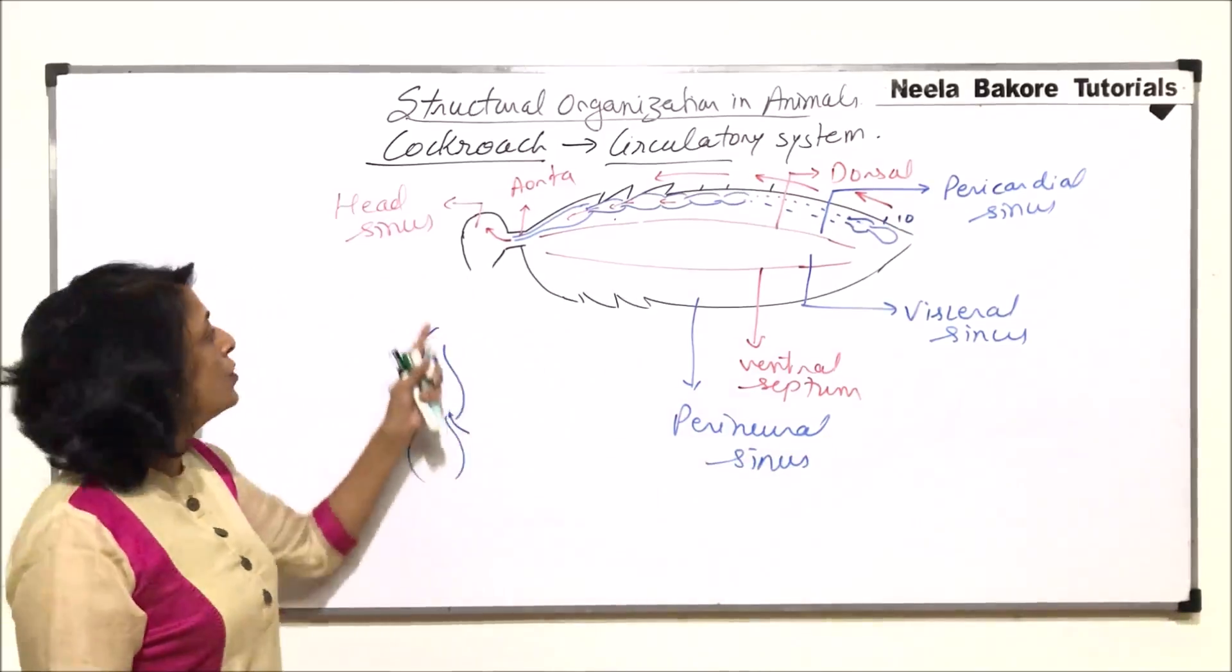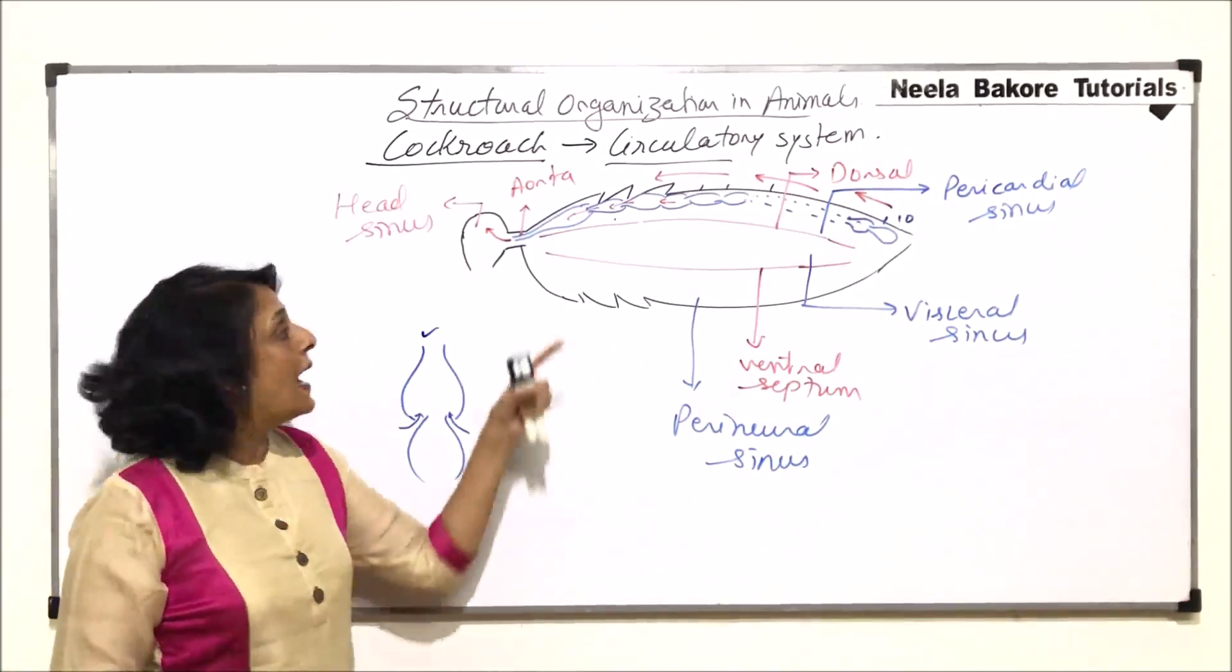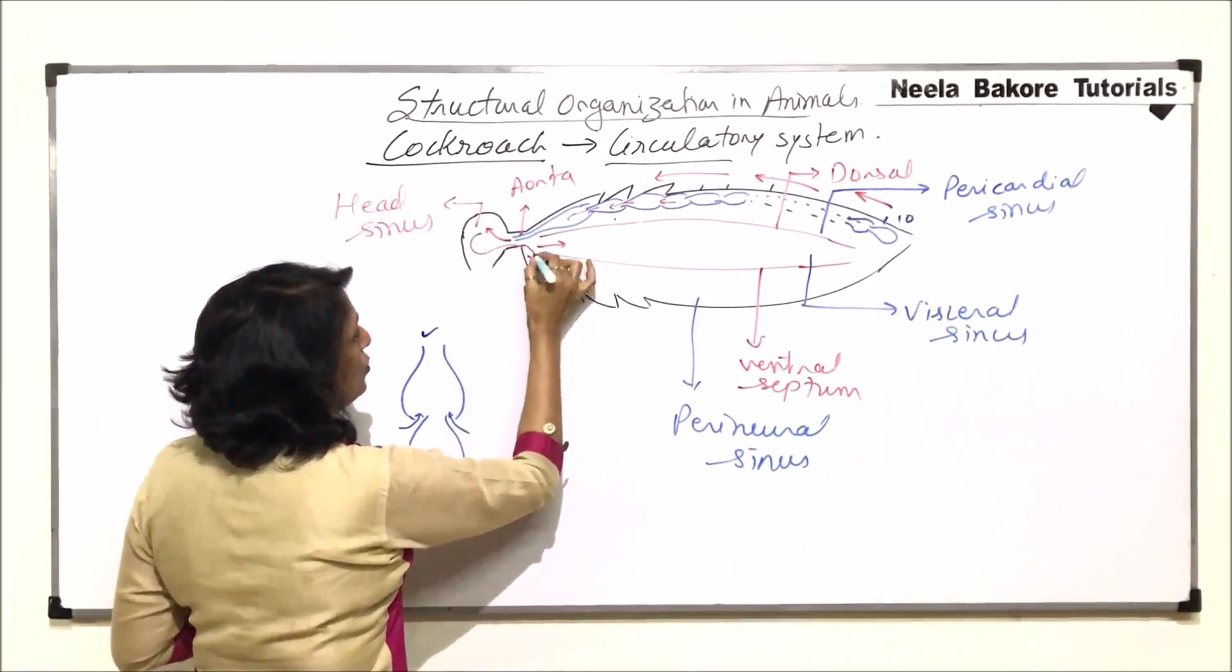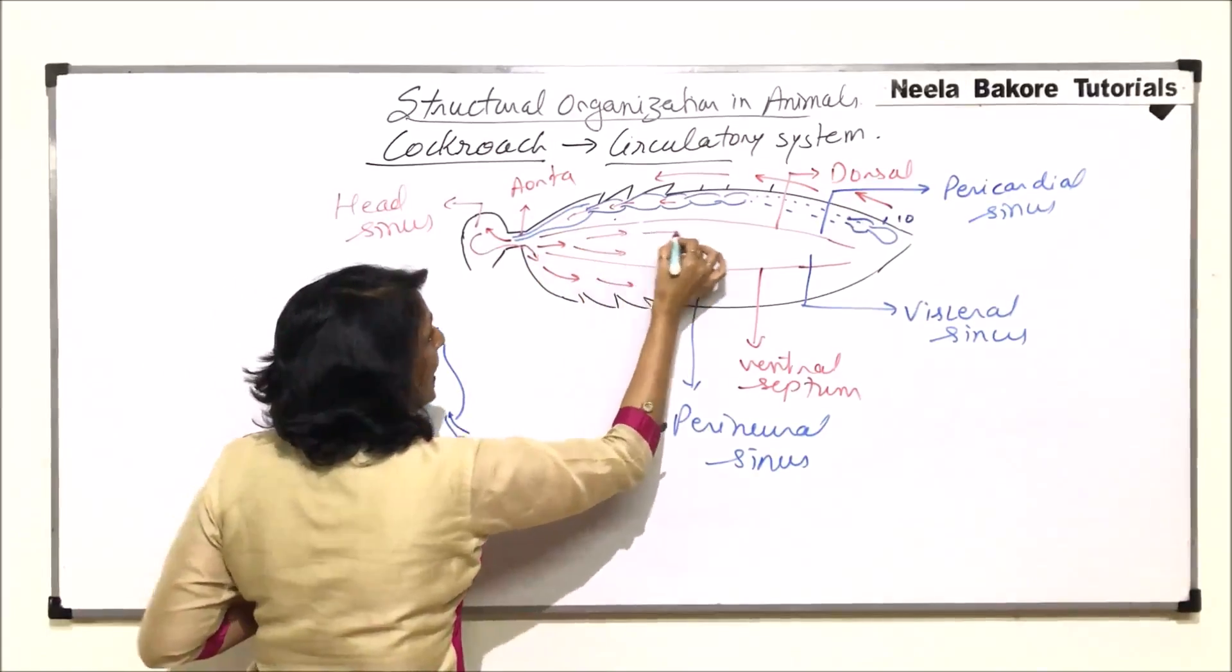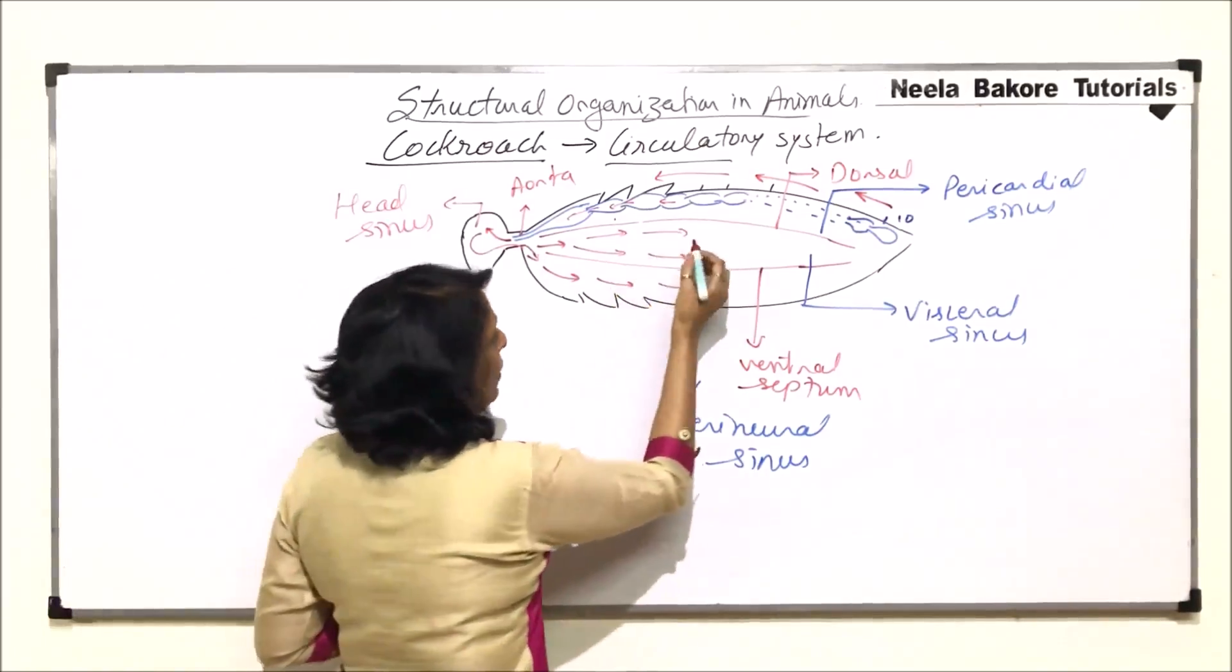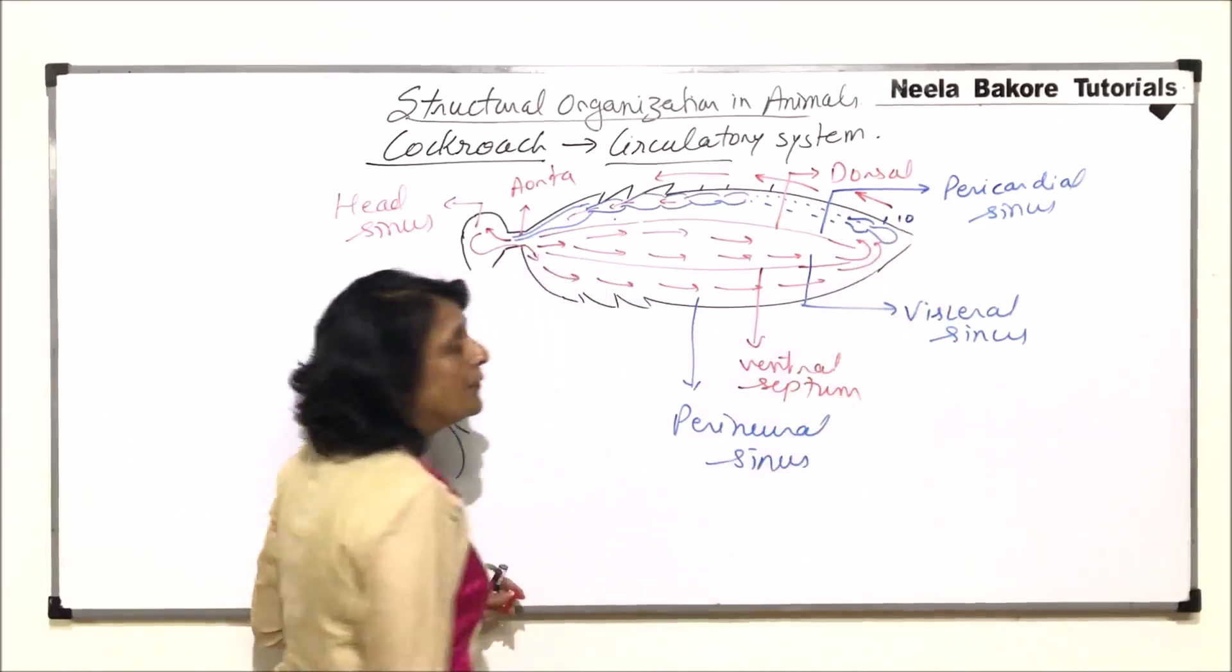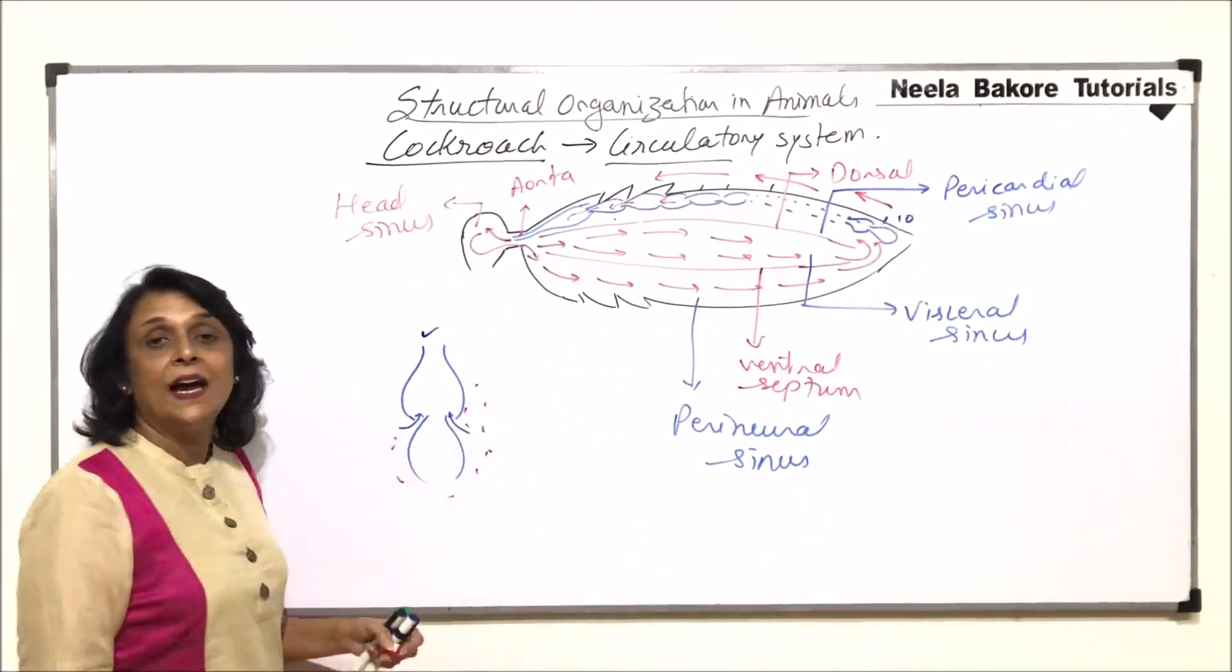So now we have added one more sinus that is in the head region. So when the blood leaves the heart, it first comes into the head sinus. Now from the head sinus, it goes into the two sinuses. That is perineural and perivisceral. So this is how the blood is going to flow. Now the blood flows from here and ultimately it goes into the pericardial sinus.